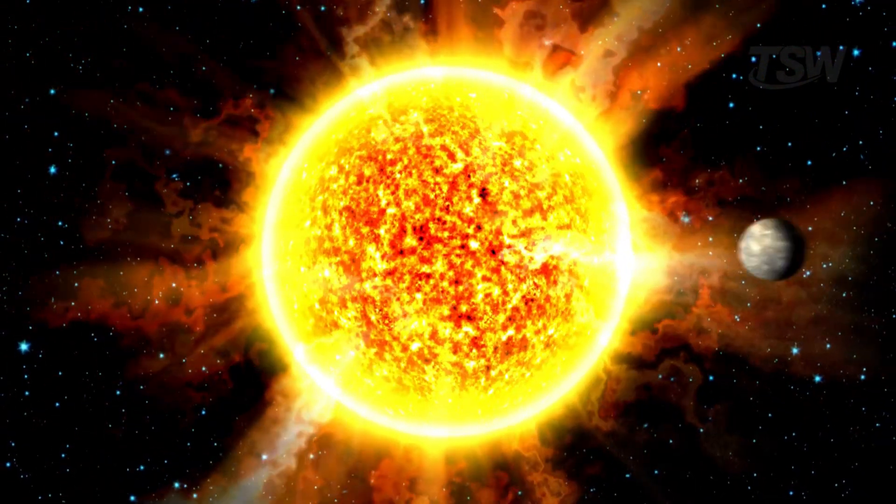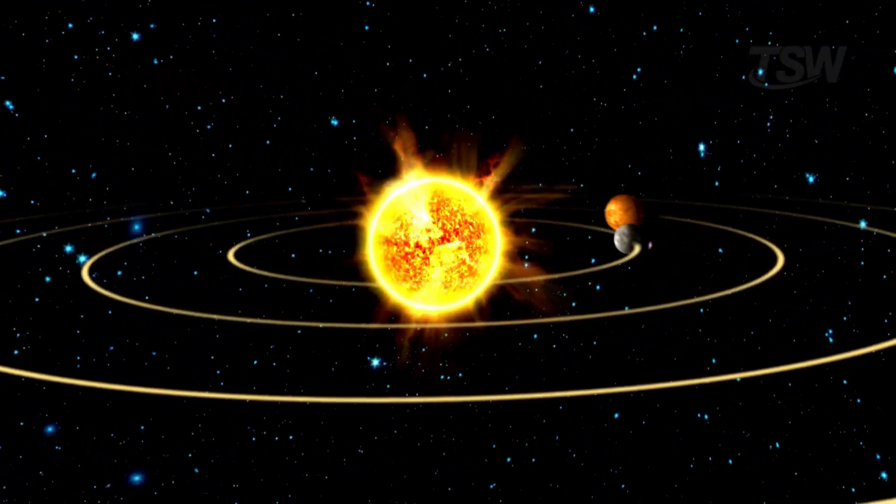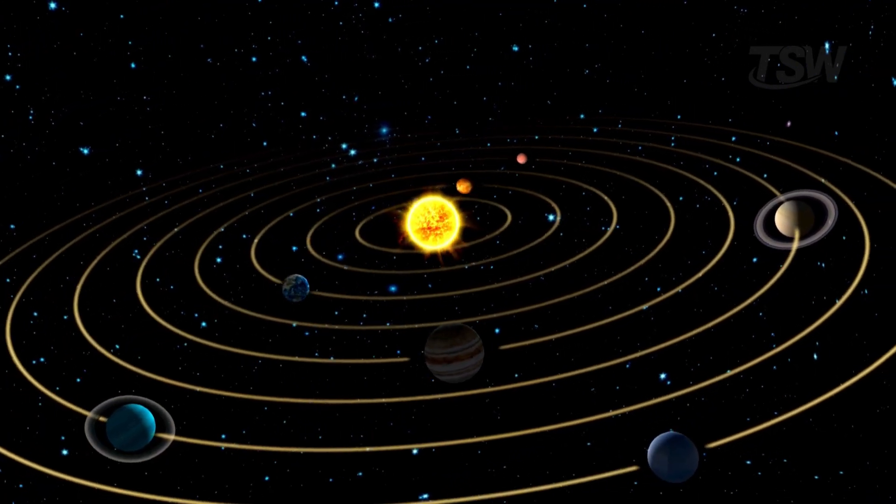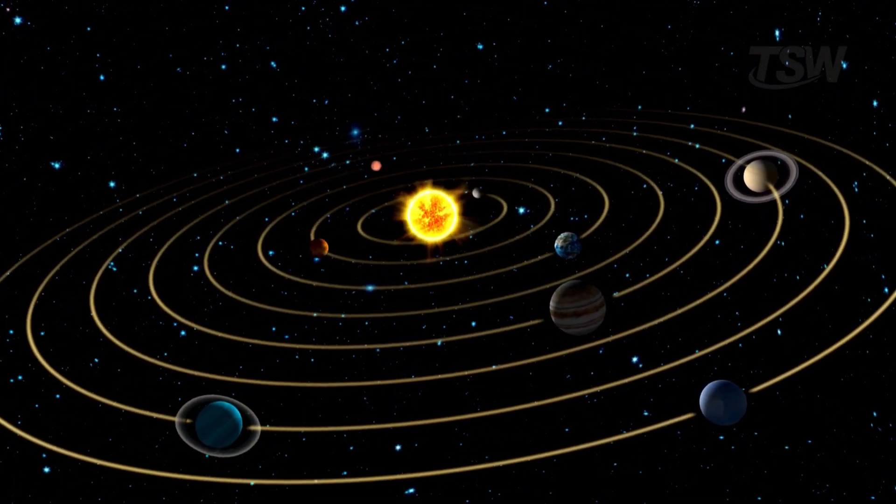In the models we learned as kids, the sun sits in the center, unmoving, while the planets quietly orbit around it. That model is useful for teaching the basics, but it's only a simplification.